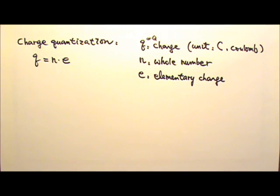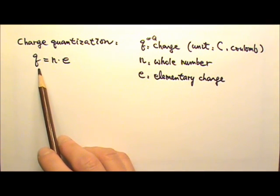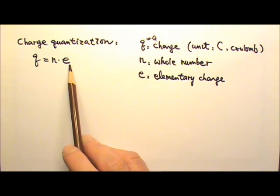When an object carries a net charge, it either loses a certain number of electrons or gains a number of electrons. So as long as we are not referring to subatomic particles, the amount of net charge an object can carry is always a whole number times the elementary charge.